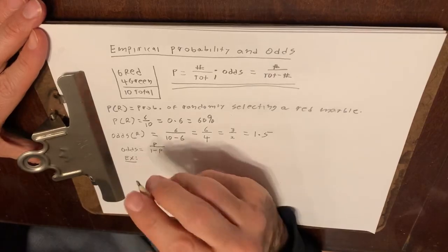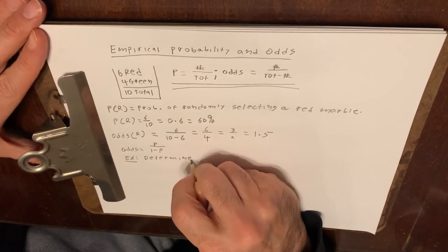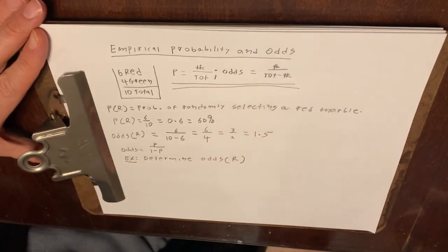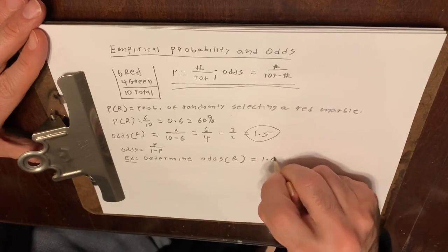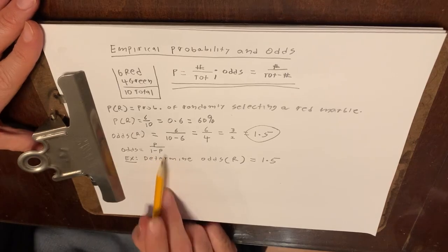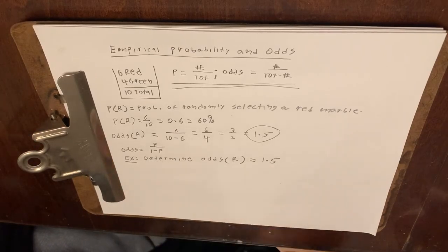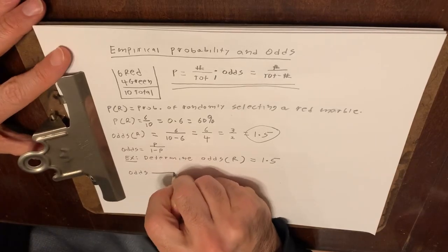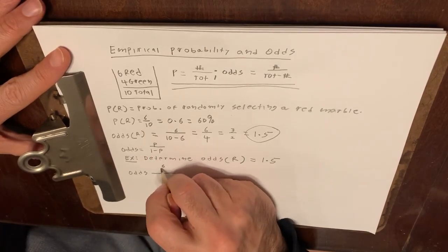So let's use this formula here to determine the odds of randomly selecting a red marble. Now we did this already and we should get 1.5. We did it already, but we didn't do it using this formula here. So let's do it using this formula and see if we really do get 1.5. And if we do, we'll see an example of this formula in practice. So we already know that if odds is equal to P over 1 minus P, the probability of randomly selecting a red marble is 6 to 10.